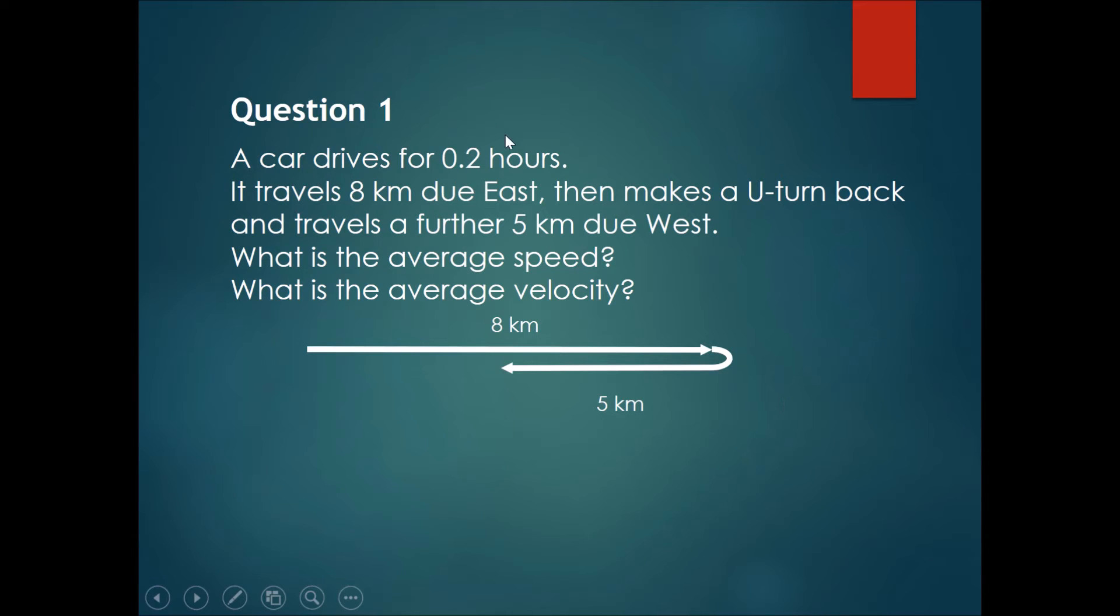A car drives for 0.2 hours. If it travels 8 km due east, then makes a u-turn and travels a further 5 km due west, what is the average speed and what is the average velocity? I'll pause it here; please do the question.